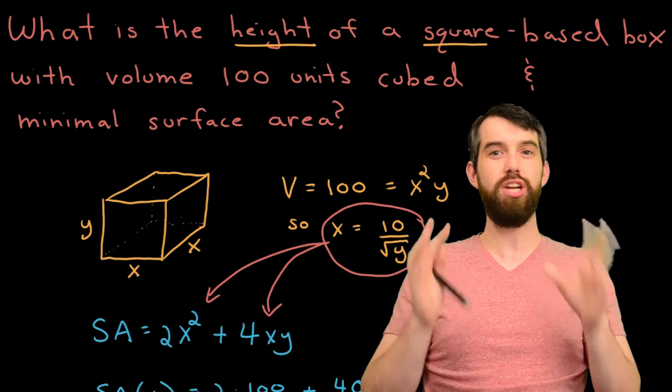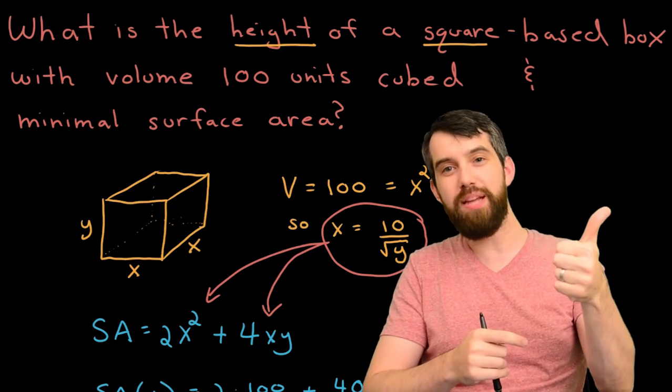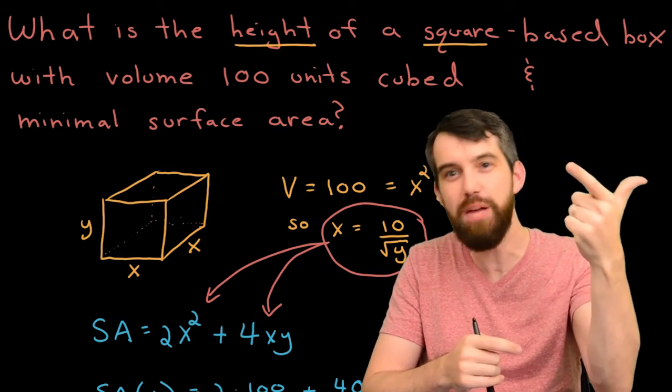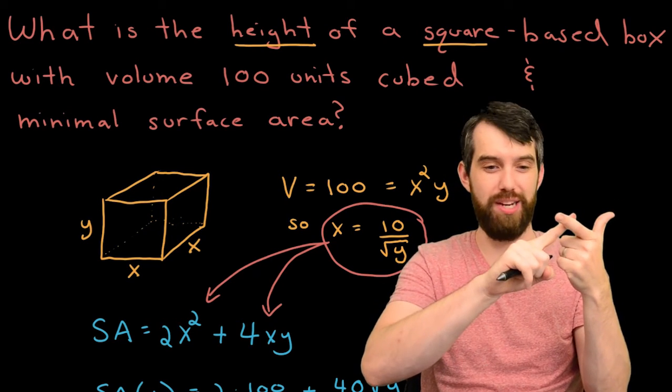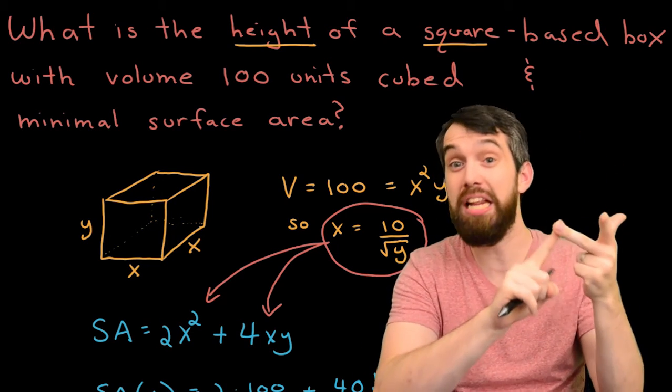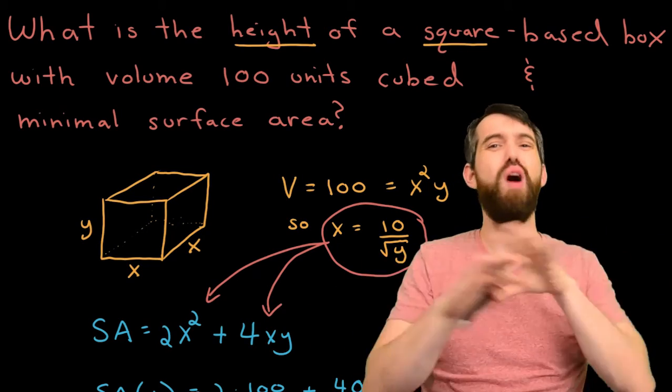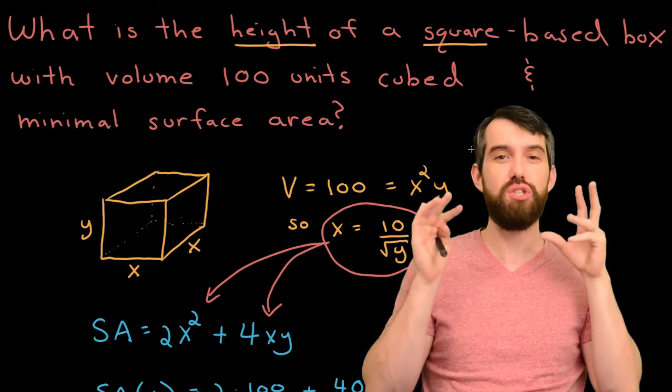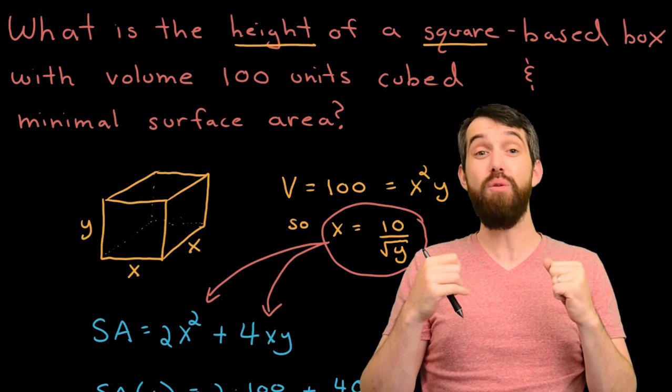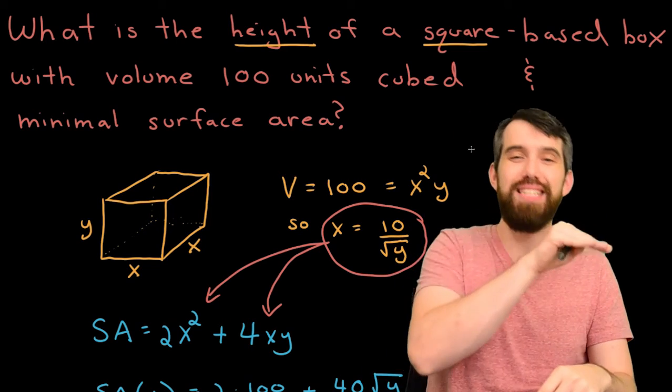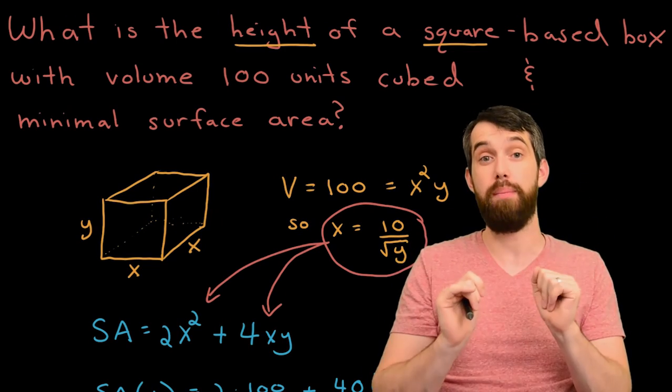Alright, so just to summarize here, remember that the first step is to draw that picture. We want to carefully label the picture where we respect whatever variables we put inside of our picture. We write down our constraining equation. That was volume in this case. We write down the thing we're trying to minimize or maximize. That was the surface area. Go ahead and find all of the critical numbers. And then when you've found those critical numbers, you have to test. Are they minimums or are they maximums? And in this case, it was a minimum.